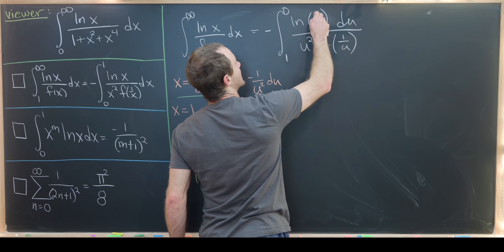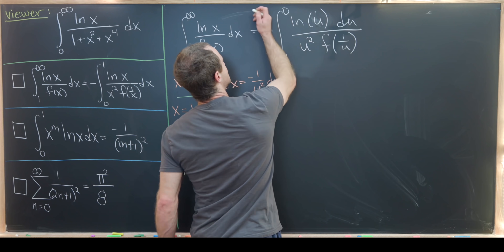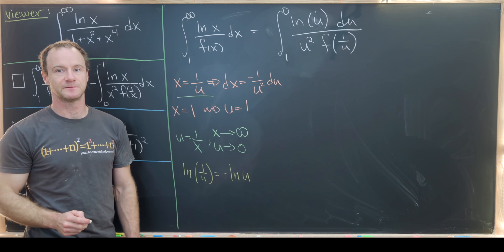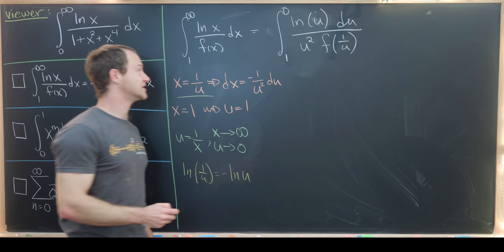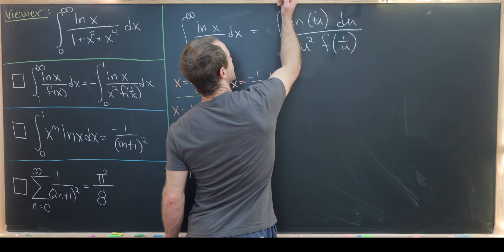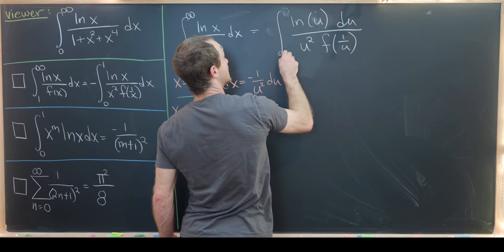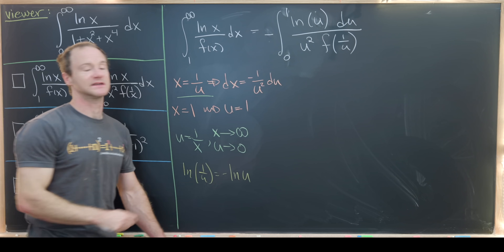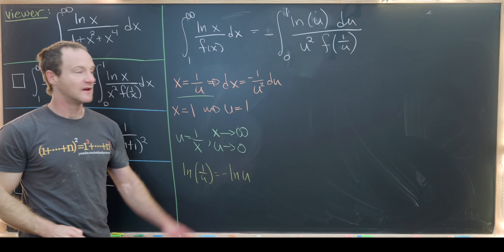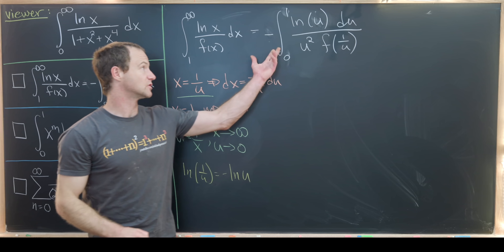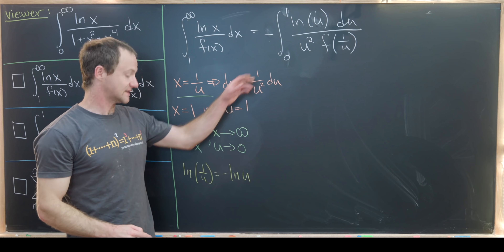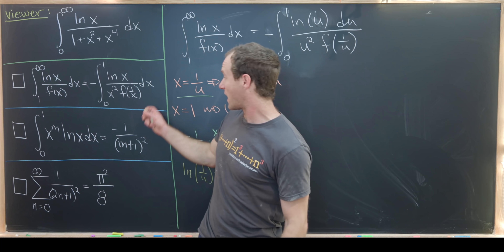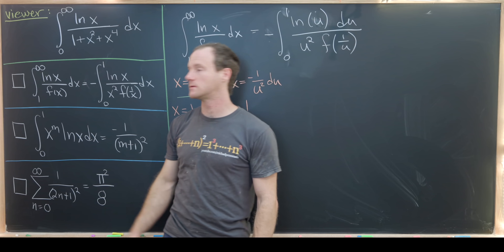This becomes natural log of u if we change the minus to a plus. Next, we change the order of the bounds of integration and change this back from a plus to a minus. Finally, we replace all the u's with x's and we have derived this first tool.